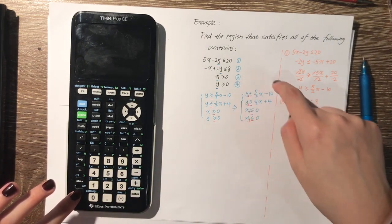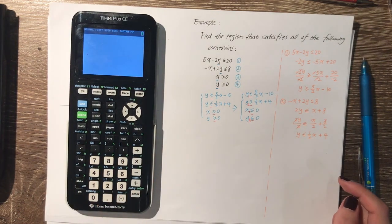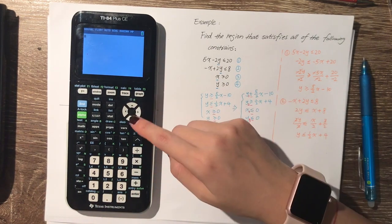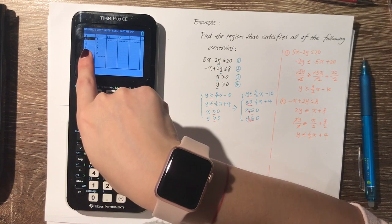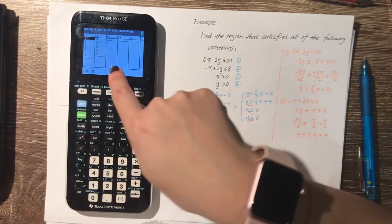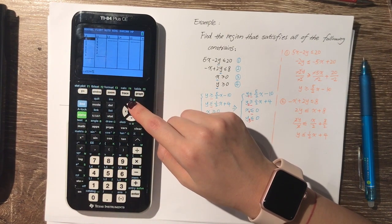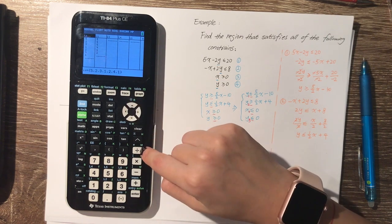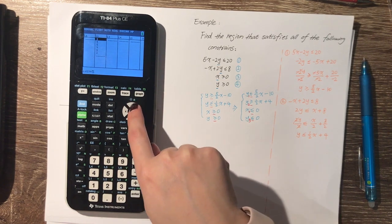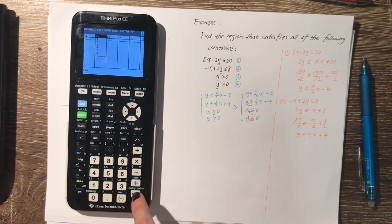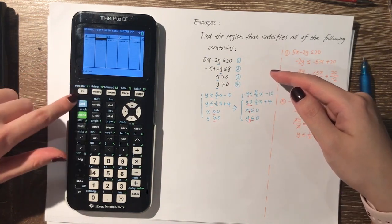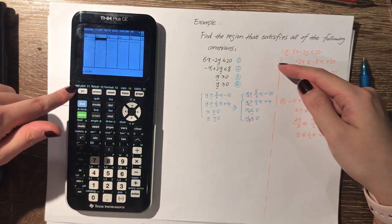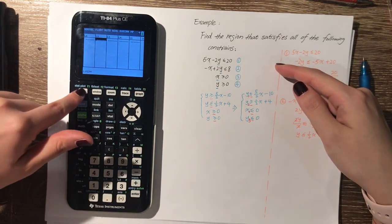Now we can turn on the calculator. First, click STAT then ENTER to check for any existing lists. If there are existing lists, we need to clear them — highlight list one, click CLEAR, then do the same for list two. Then click SECOND and Y= which is STAT PLOT to check for active stat plots.